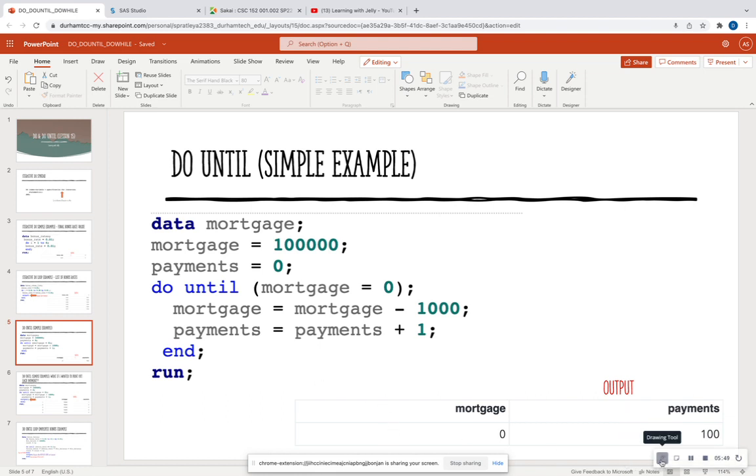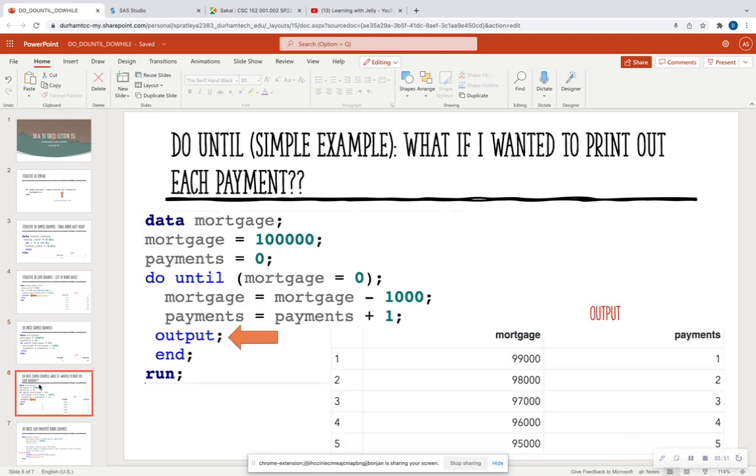So let's go ahead and look at yet another example with do until. What if I want to print out each payment, like a good receipt for every month? Notice once again that in order to print out each payment and not just a final value, you need this output statement before the end. And so now I see on my first payment, my mortgage is $99,000, then $98,000, then $97,000, so forth and so forth.